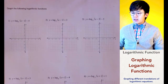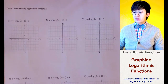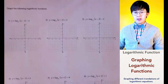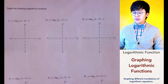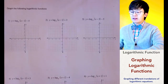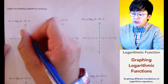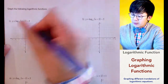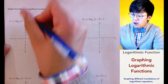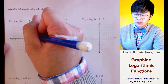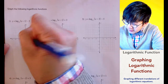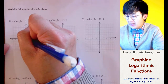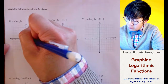Now let's graph the logarithmic functions given by our axis. To graph the first function, logarithmic of x minus 1 to the base 6 minus 5, let's first graph the basic logarithmic function, log of x to the base 6. Log of x to the base 6 will have a point of inflection, with the x-intercept at (0, 1).